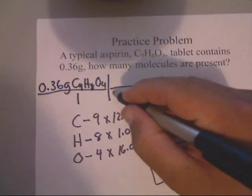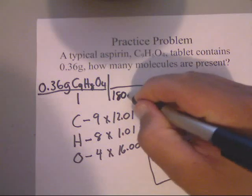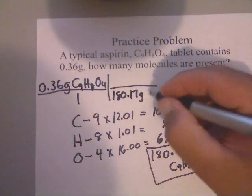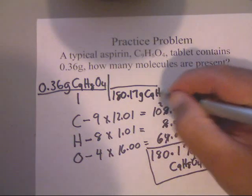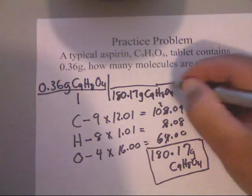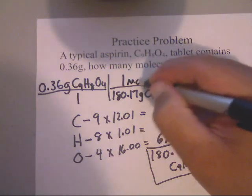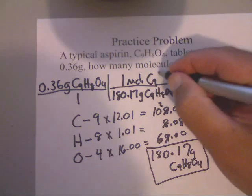So, I'm counting 180.17 grams of C9H8O4. No matter what, you can't get away from calculating molar mass. Make sure you learn it.